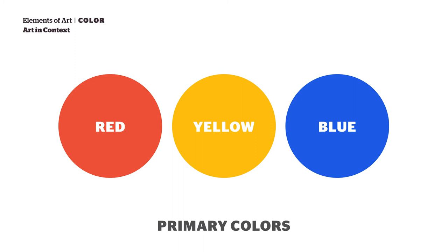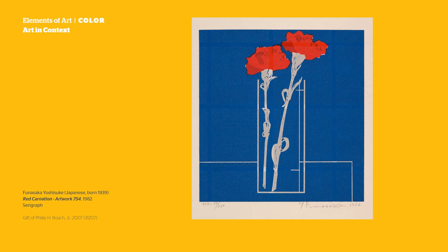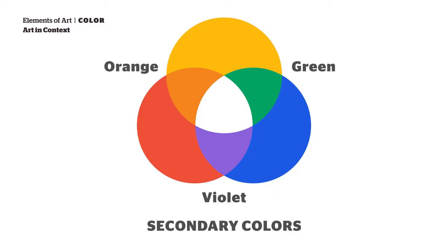Red, yellow, and blue are generally thought of as primary colors or primary hues, because it was thought that they cannot be made from the mixing of other colors. These three primary colors can be mixed together to create just about every other color. If you mix two of the primary colors together in equal amounts, you will get the secondary colors. Green, orange, and violet are known as the secondary colors.